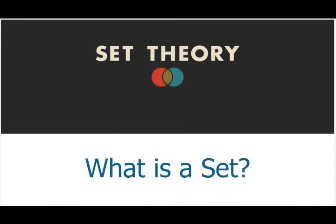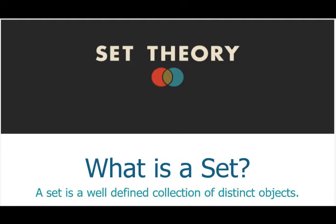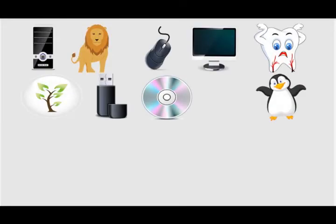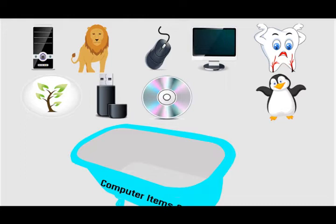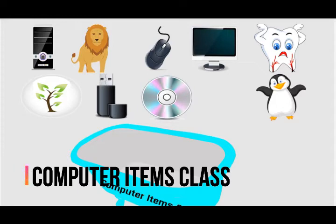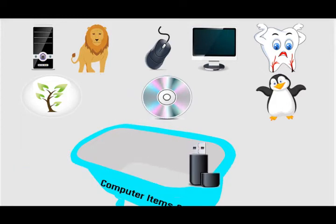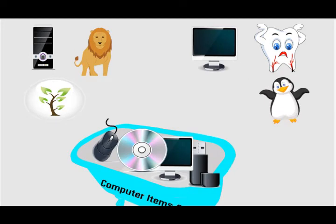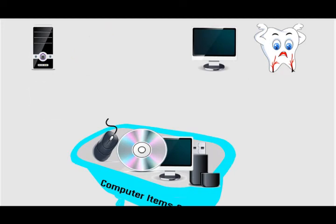A set is a well-defined collection of distinct objects. These objects are called members or elements of the set. Let's understand this definition with some examples. Among the items shown on screen, I want to group those that belong to computers — that is, items used in computers. A pen drive is used in computers, so it belongs to that class. The same is the case with monitor, CD, and mouse. But leaves and animals do not belong to the computer item category, so they are not put in this class. I will continue this process until I check all items.